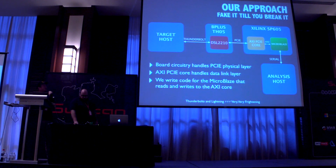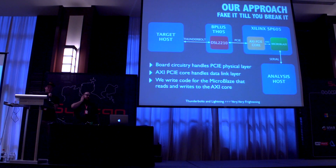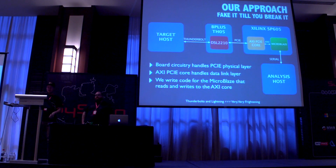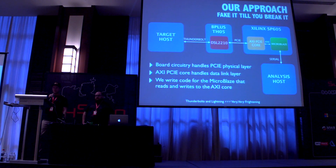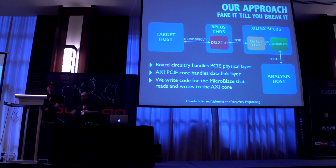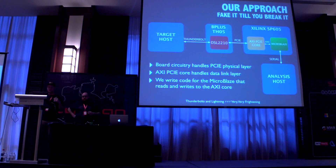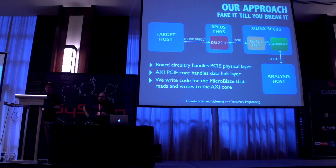What we end up with is: target host connected via Thunderbolt to a Thunderbolt-to-PCI Express adapter with the DSL 2210 Thunderbolt controller. We connect that via PCI Express to our FPGA development board, which has the AXI PCIe core implemented and is hooked up to a MicroBlaze. We communicate with the MicroBlaze via serial on our analysis host. The circuitry handles the physical layer of PCI Express, the AXI PCIe core handles the data link layer, and we write C for the MicroBlaze which performs reads and writes over PCI Express to the target host.